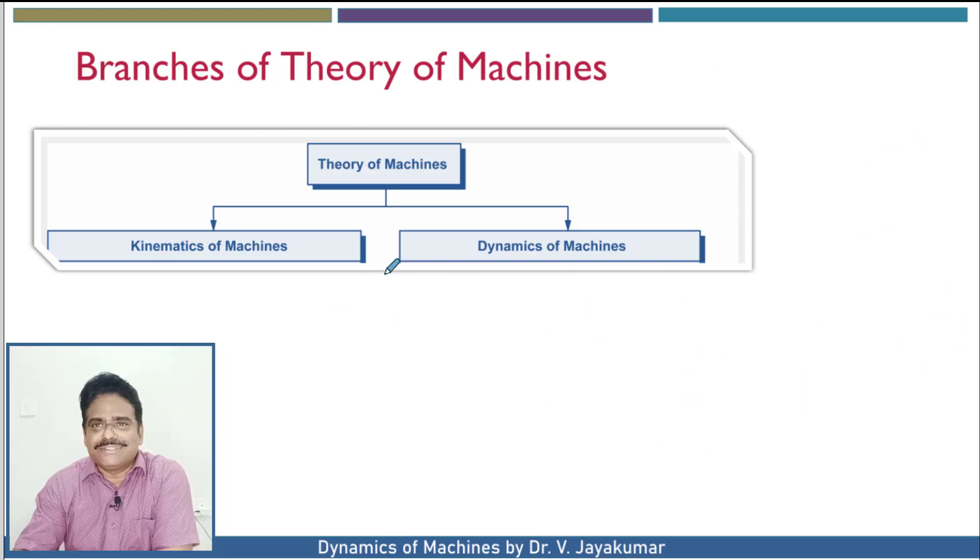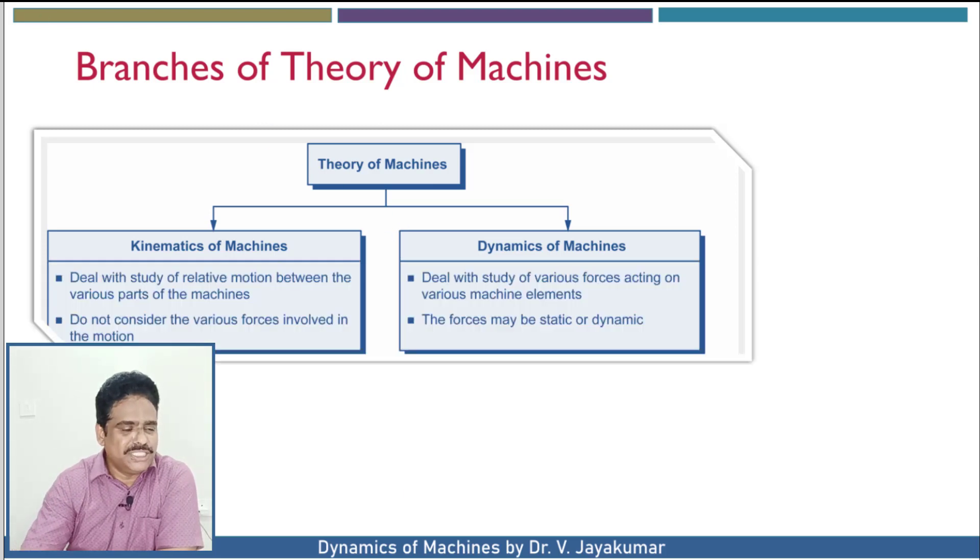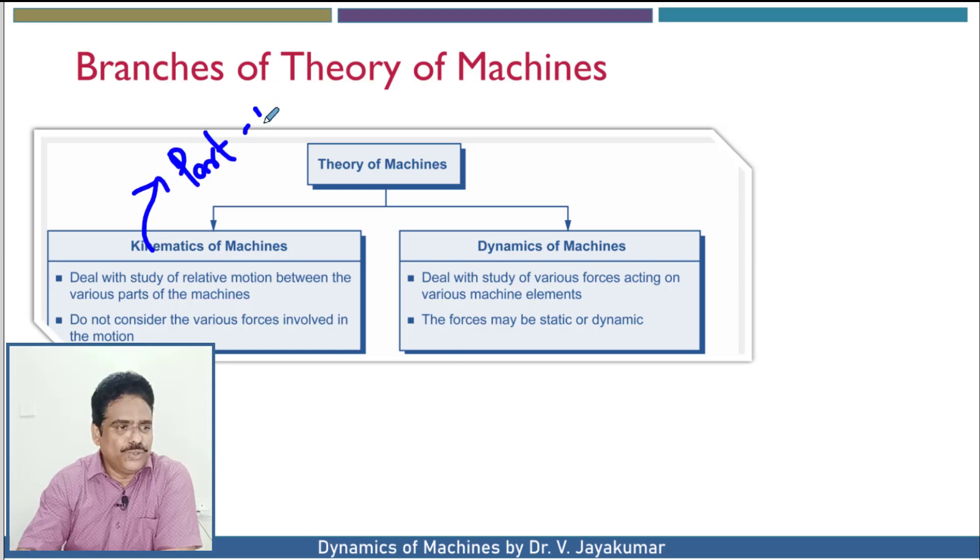So, one should study relative motion between the various parts of the machine. In that machine, there will be many forces acting on them. This is what we call theory of machines. So, in the theory of machines or mechanics of machines, it involves these two things. This is what we are going to illustrate with some example. Now, what is that domain or scope of kinematics of machines and dynamics of machines? These are the two branches of theory of machines. Already this is part one you have completed in your previous semester. This is what we are going to study now, part two.